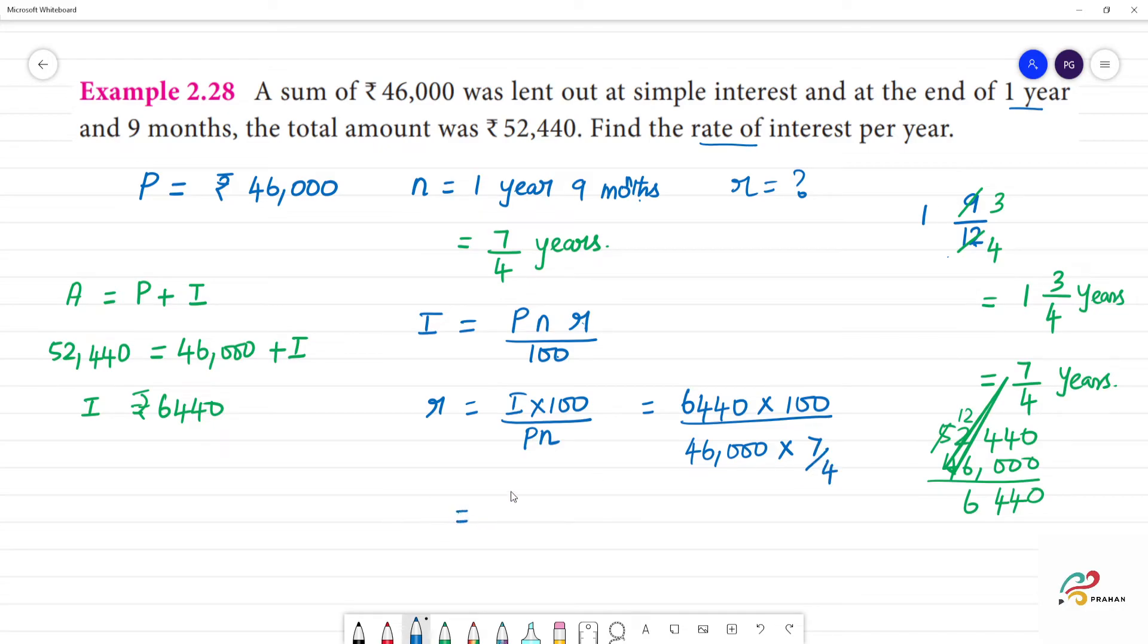Canceling, 644 times 4 by 46 times 7. 7 by 4 becomes 4 by 7. 9 sevens are 63, remainder 1. 2 sevens are 14. 1 times 46 is 46. 2 times 46 is 92. R equals 8 percent.